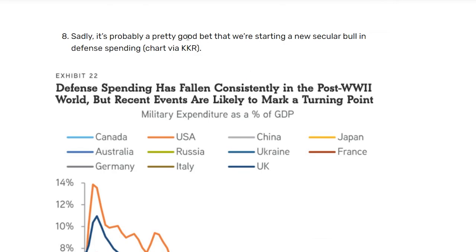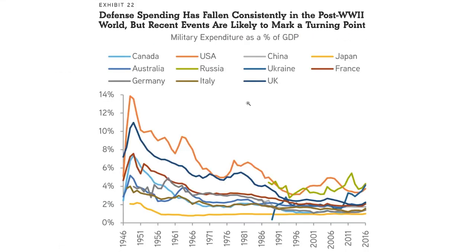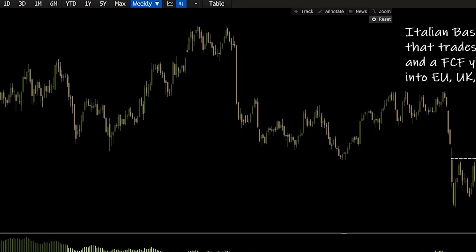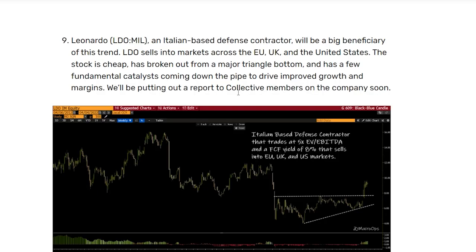With everything that happened in Russia and Ukraine, we're probably starting a new secular bull in defense spending. This chart shows that defense spending has fallen consistently in the post-World War II world, but recent events are likely a turning point, with countries across the world spending more on defense. Leonardo, an Italian-based defense contractor, will be a big beneficiary of this trend — they sell into markets across the EU, UK, and the United States. The stock is currently very cheap and has broken out of a major triangle bottom, with good catalysts coming to drive improved growth and margins. This is one we're keeping on our watch list.